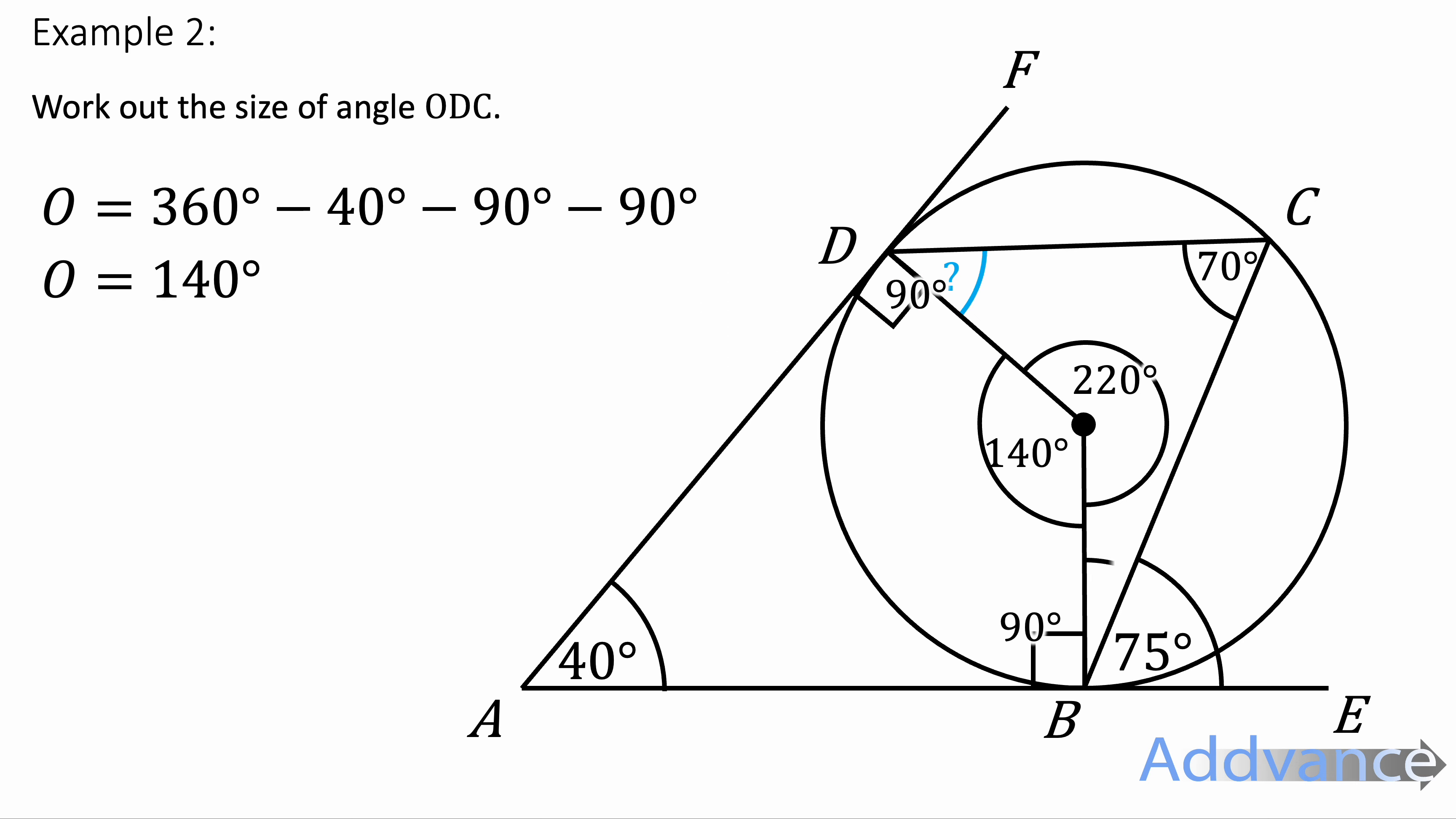I'm almost there. Now there's one more angle I need to find. And this is the angle at the bottom. This will add to make a right angle because the 75 and this angle are a right angle with the tangent and the radius. 90 minus 75 gives me 15 degrees.